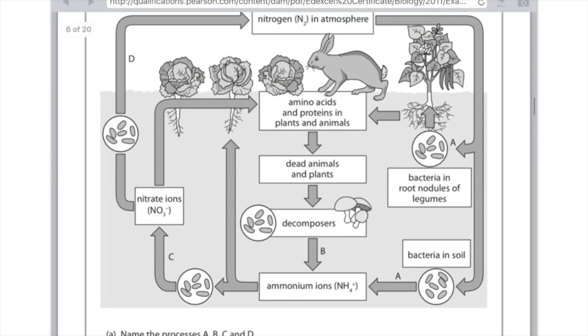Right so on the right hand side we have an A arrow and it follows round and the clue here is that the A arrow is pointing at the bacteria in root nodules of legumes and remember I just told you that those bacteria are nitrogen fixing bacteria so that's what you need to write for A.